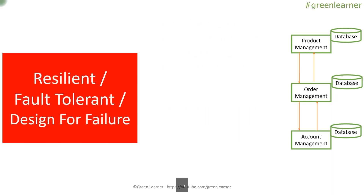The next principle is resiliency — it is about fault tolerance and designing for failure. In a distributed system with multiple microservices, failures will obviously occur. The key point is how you handle those failures gracefully. If a failure occurs in Product Management, you don't want Order Management and Account Management to also fail. You handle failures gracefully by being aware that certain failures are expected — you learn this by analyzing and keeping records of failures over time.